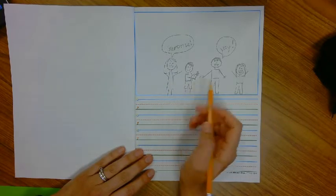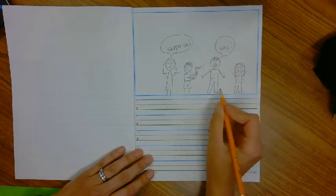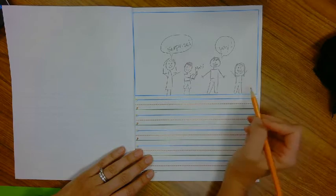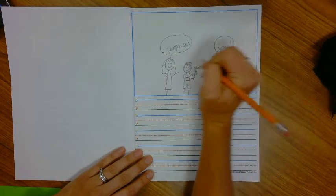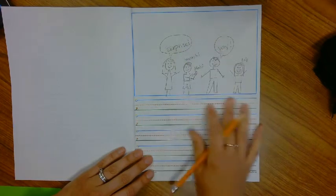And he's saying yay, and then I'm over here and I'm saying surprise. And this is my daughter Lily and she is so excited too. And this is Malachi. So you can label everything, but you're not writing the story yet.